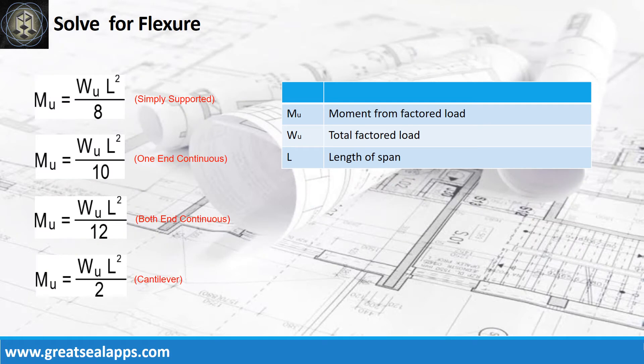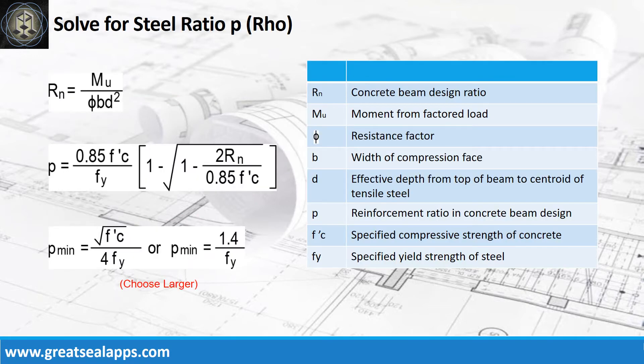Select moment formula based on support type — like simply supported, one end continuous, both ends continuous, or cantilever. After solving the maximum moment, get the concrete beam design ratio Rn, then solve the reinforcement ratio rho, and check against rho minimum required per ACI code.